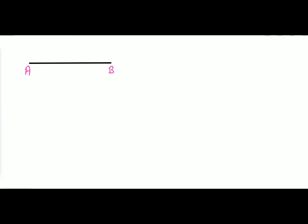Displacement is the distance between two points. If we start moving from point A to point B, the shortest distance between the two points covered in a straight line is the displacement. Displacement is a vector quantity, so it must have magnitude along with direction.